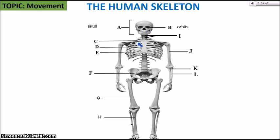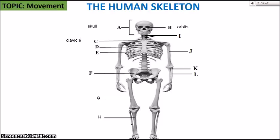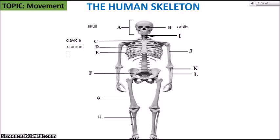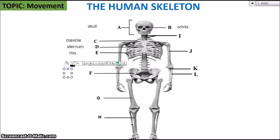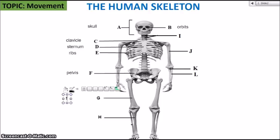C is pointing at the clavicle, or the collarbone. D is pointing at the sternum, which is the breastplate. E is locating the ribs of the ribcage, and the ribcage is important for protecting vital organs such as the lungs and the heart. F is pointing at the pelvis or the pelvic girdle, also known as our hip bone. G is the femur, the largest bone in the body — that is our thigh bone.